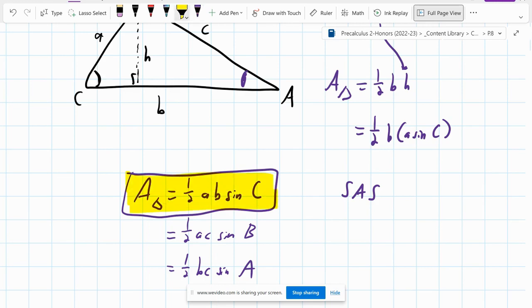And again, this is a side angle side. It's one half side, side, and the angle between them. Be careful not to use cosine. This is a sine property.